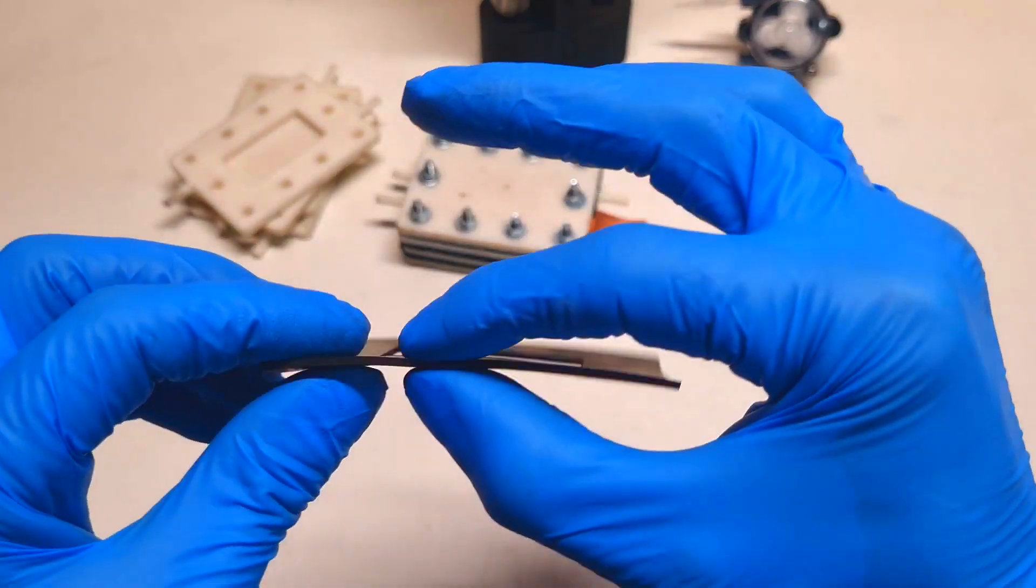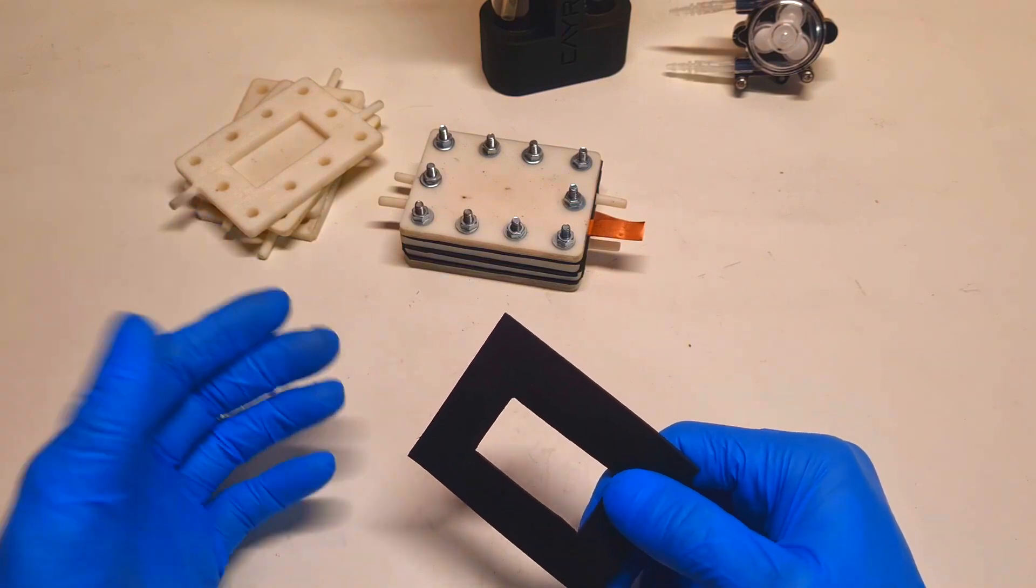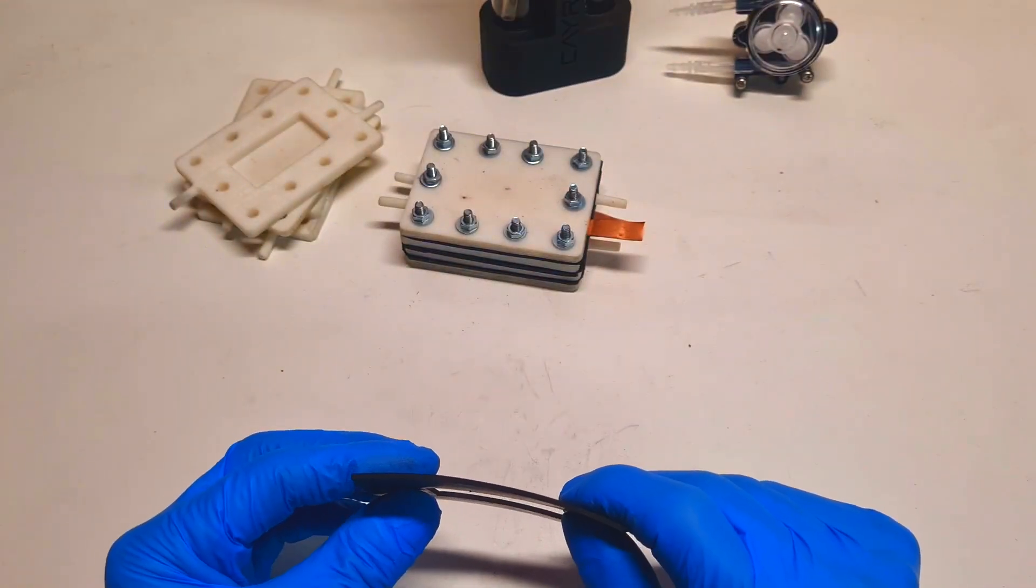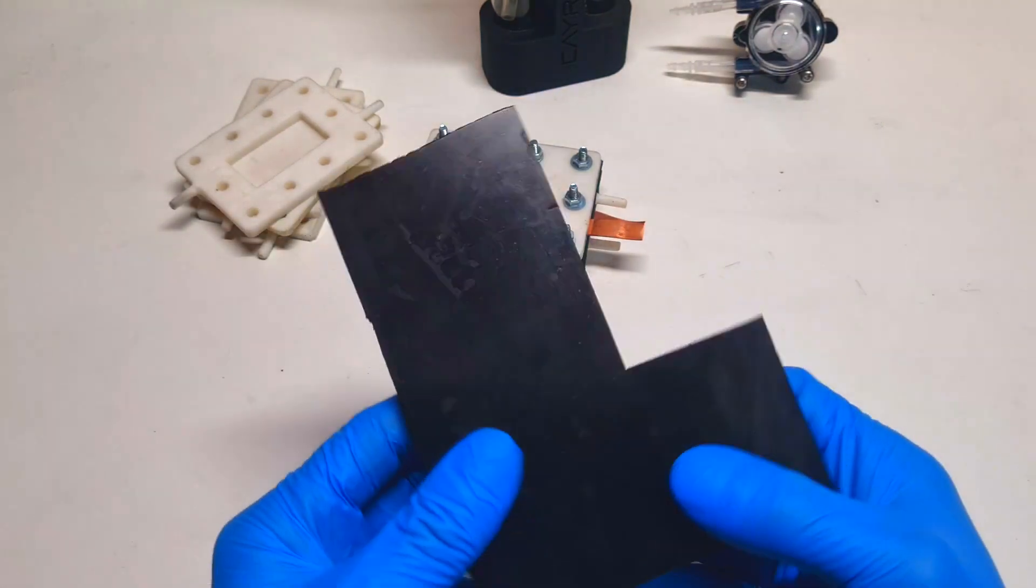This one has a thickness of 1.5mm. But if you want to make cell housing from this rubber, the thickness needs to be a little bit bigger. Then you will have something like this.